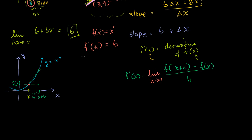Now let's apply this idea to the particular function f of x equals x squared. We could have the point x, x squared — so f of x is just equal to x squared. And then this would be the point x plus h, a little bit further along, and its y value is x plus h squared. In the last video, we did this for a particular x — we did it for 3 — but now I want a general formula. You give me any x, and I'll tell you the slope. You give me 7, I'll tell you the slope at 7. You give me negative 3, I'll tell you the slope at negative 3.